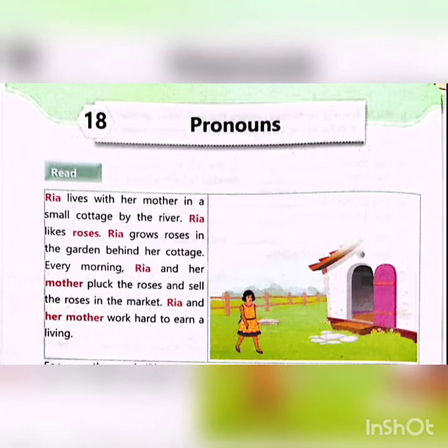Now, here you can see that some special names — specifically the words Ria, roses, and Ria and her mother — are repeated.